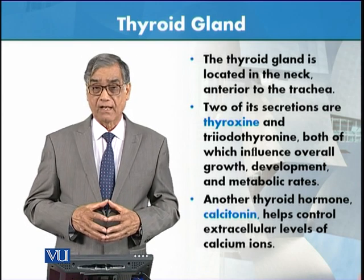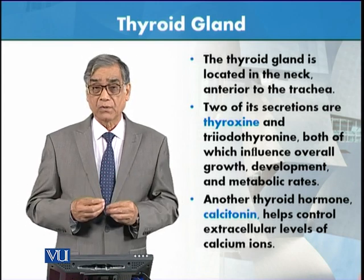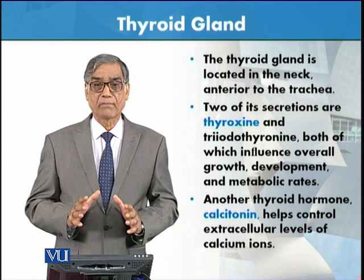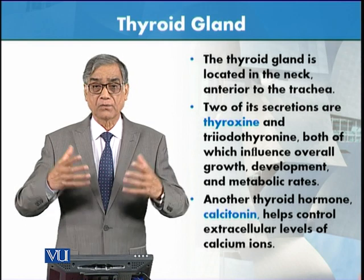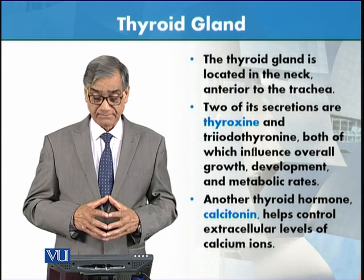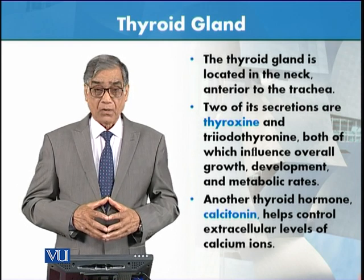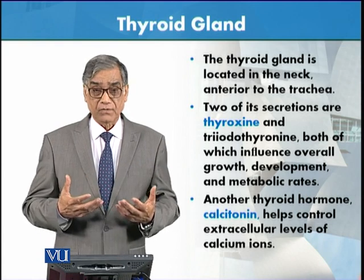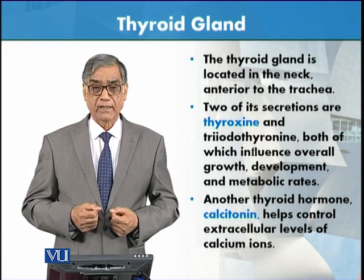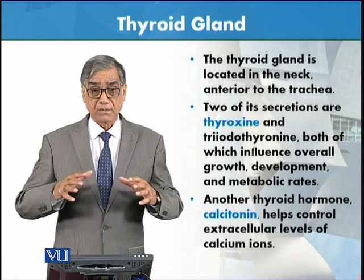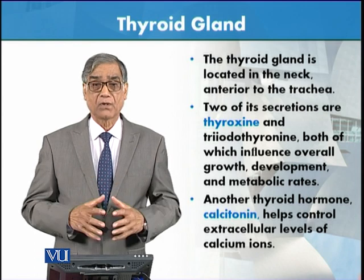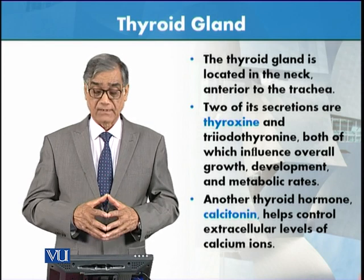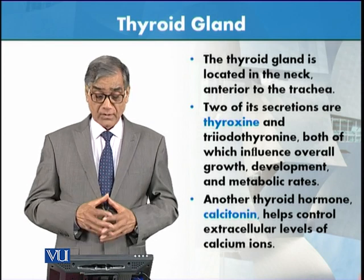This hormone is very important. If it is reduced, then there is no proper growth — the child is in a retarded form and the whole growth process is slow. The metabolic processes are under the influence of these very important hormones, which is thyroxine.